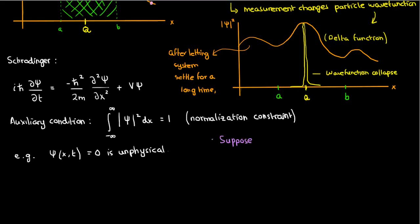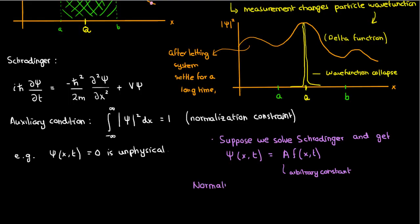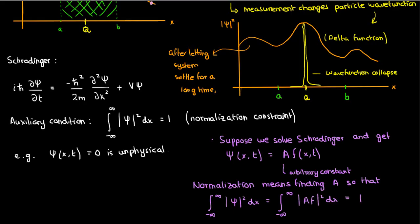So let's say we solve Schrödinger's equation and get a solution of A times f of x comma t. The process of normalization is to find the value of the constant A so that the solution obeys the normalization condition. But we might end up with a difficult task: if the wave function psi is dependent on time — it has a different shape for different times — then wouldn't the normalization constant change with time as well?